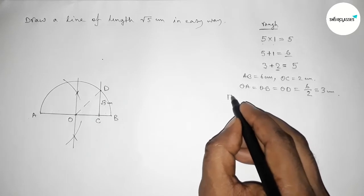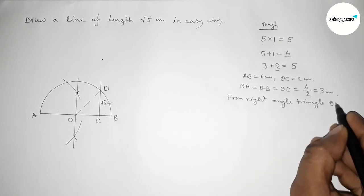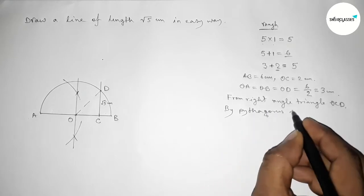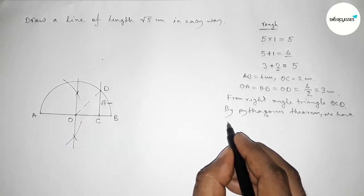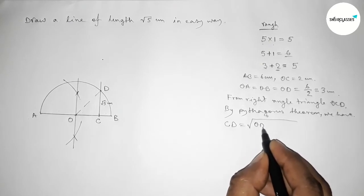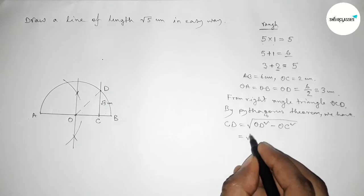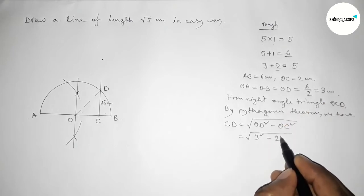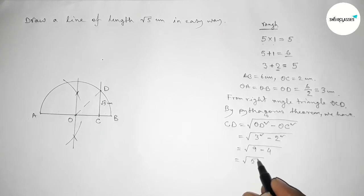From right angle triangle OCD, applying the Pythagorean theorem to find the perpendicular CD: CD equals root over (OD squared minus OC squared), which is root over (3 squared minus 2 squared), equals root over (9 minus 4), equals root 5 centimeter.